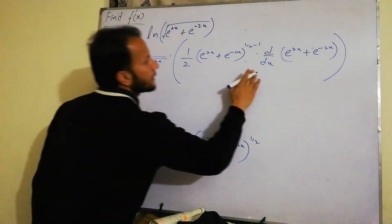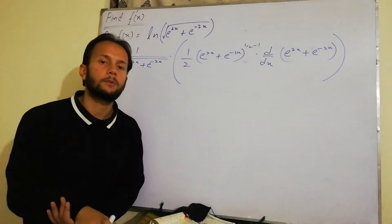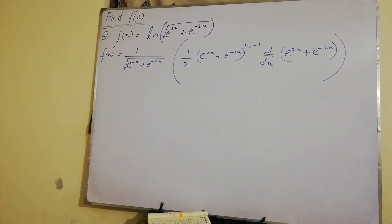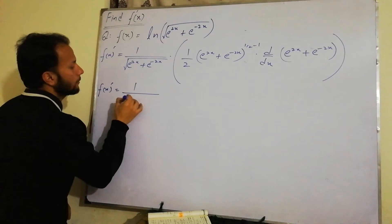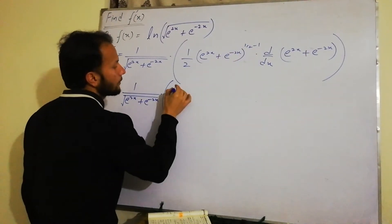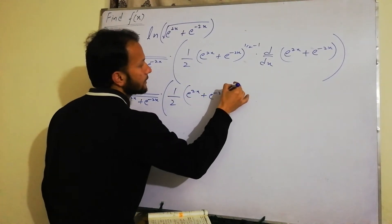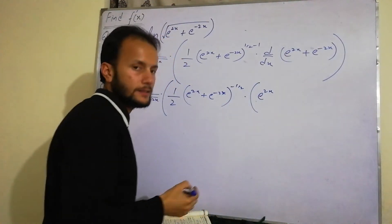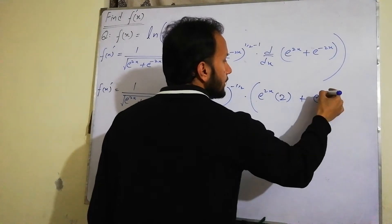We do the power simplification and the derivative separately. The first derivative becomes 1 divided by (e to the power 2x plus e to the power minus 2x, under root), into e to the power 2x plus e to the power minus 2x to the power minus 1 by 2, multiplied by the derivative of e to the power 2x plus the derivative of e to the power minus 2x.